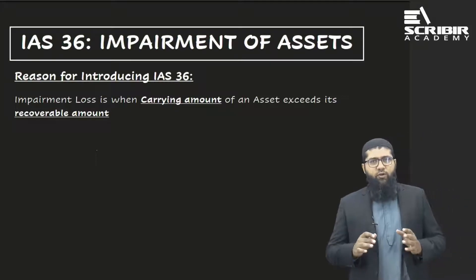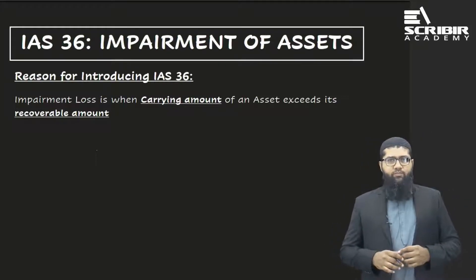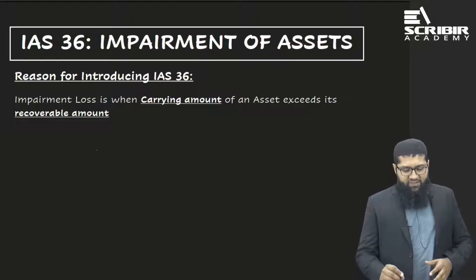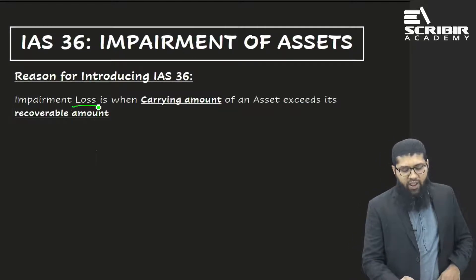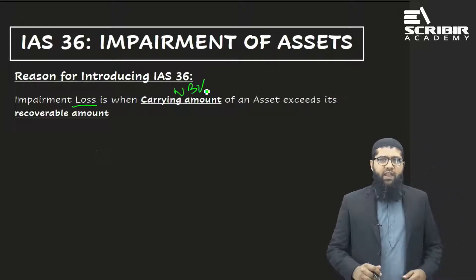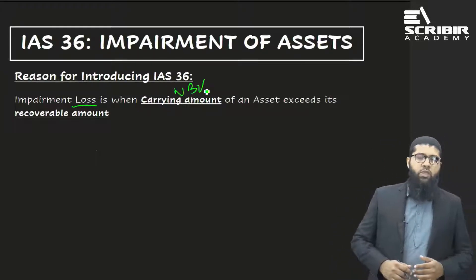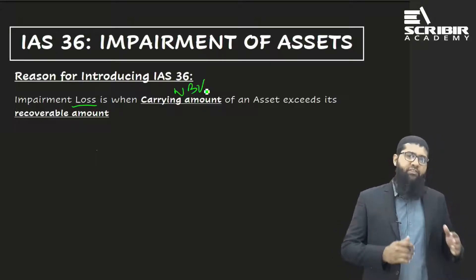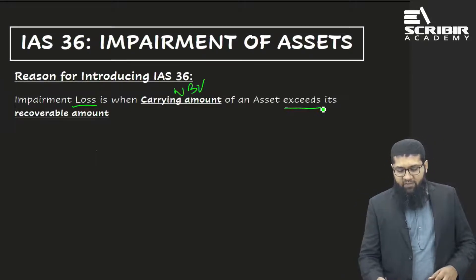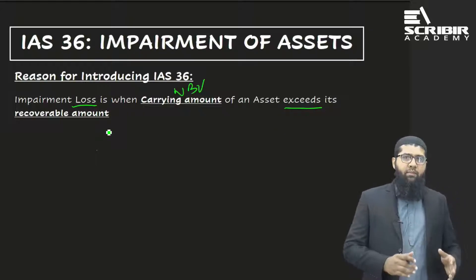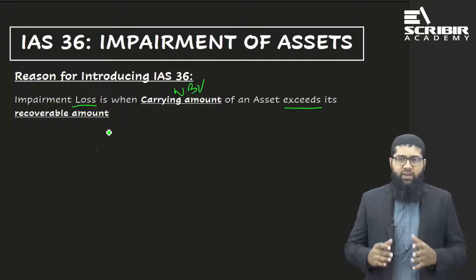IAS 36 impairment of assets says that an impairment loss arises whenever the carrying amount of an asset — that is its net book value — exceeds its recoverable amount. When that happens, we say that an impairment loss has actually taken place.